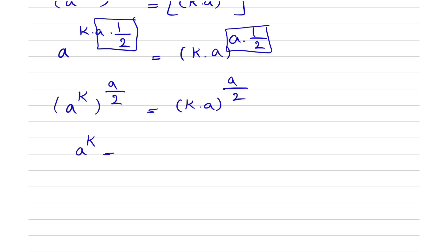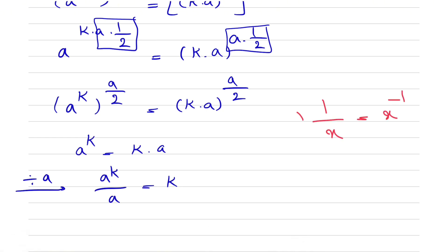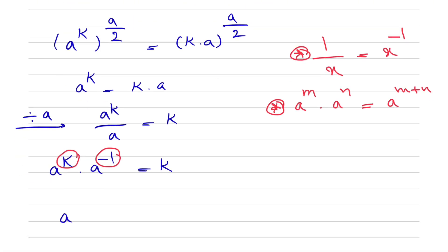So a to the k is equal to k times a. If we divide each side by a, we have a to the k over a equal to k. We know 1 over x equals x to the power of minus 1, so this gives us a to the k times a to the minus 1 equal to k. Using the rule that a to the m times a to the n equals a to the m plus n, we get a to the power of k minus 1 is equal to k.